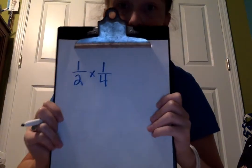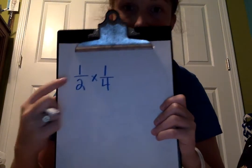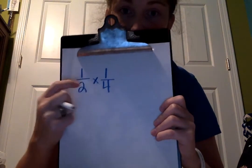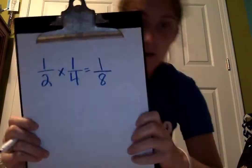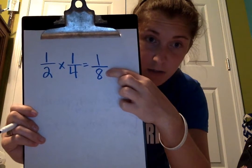So the problem I'm going to be solving is one half times one fourth. I know that I have to multiply my numerator straight across and then my denominator straight across. One times one is one, and two times four is eight. So the answer is one eighth.